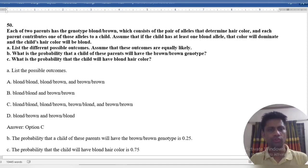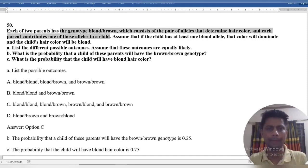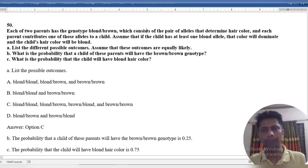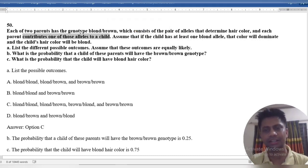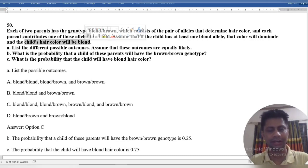Hello, each of two parents has a genotype brown-blond, which consists of a pair of alleles that determine hair color. Each parent contributes one of those alleles to a child. Assume that if the child has at least one blonde allele, that will determine the child's hair color will be blonde.